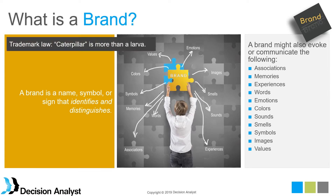Trademark law has a really interesting concept called secondary meaning. As an example, the word caterpillar is the larva of a butterfly. But caterpillar has also acquired secondary meaning as a company that manufactures heavy earth-moving equipment, with associations of power, hardness, steel, scale, diesel clatter, the color yellow, and construction progress. This secondary meaning has, in effect, become the brand itself — a really interesting concept.